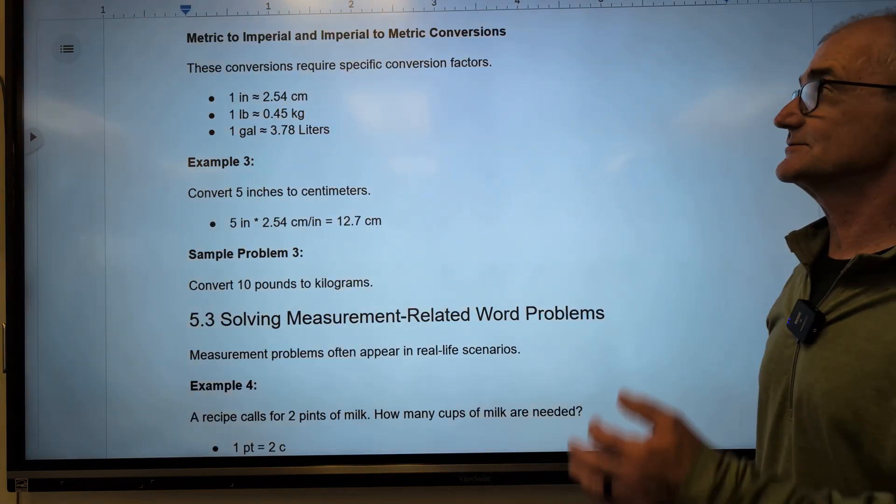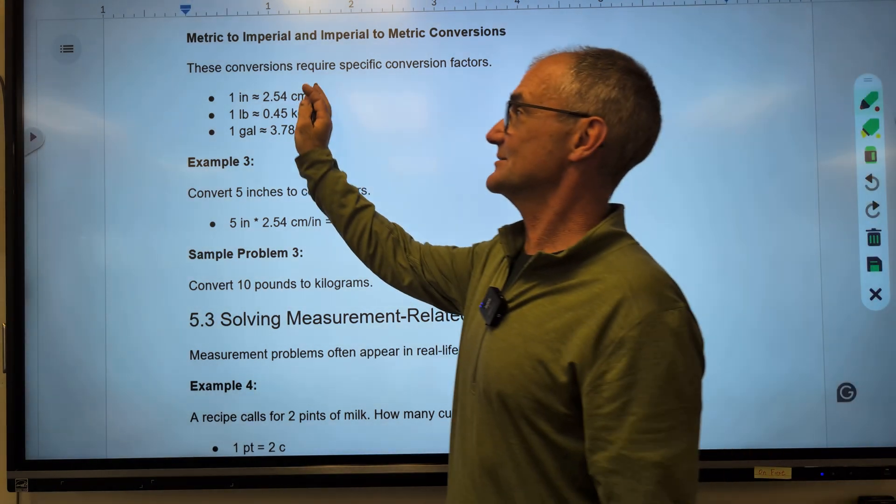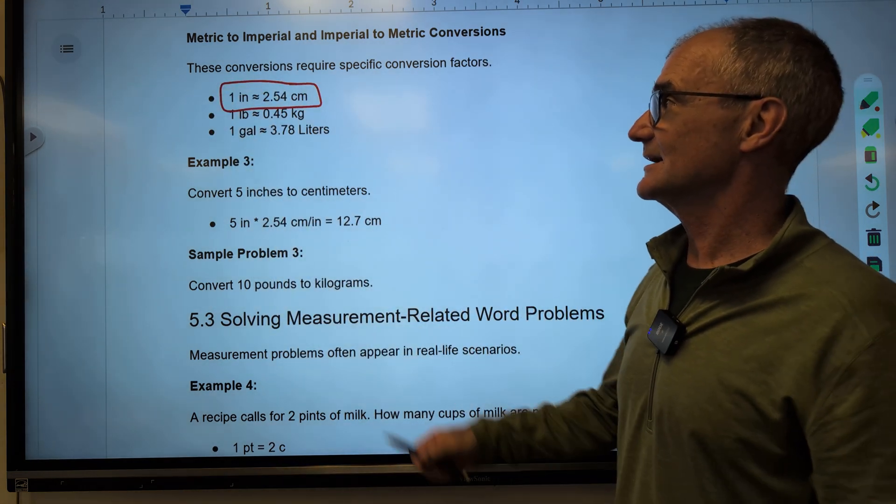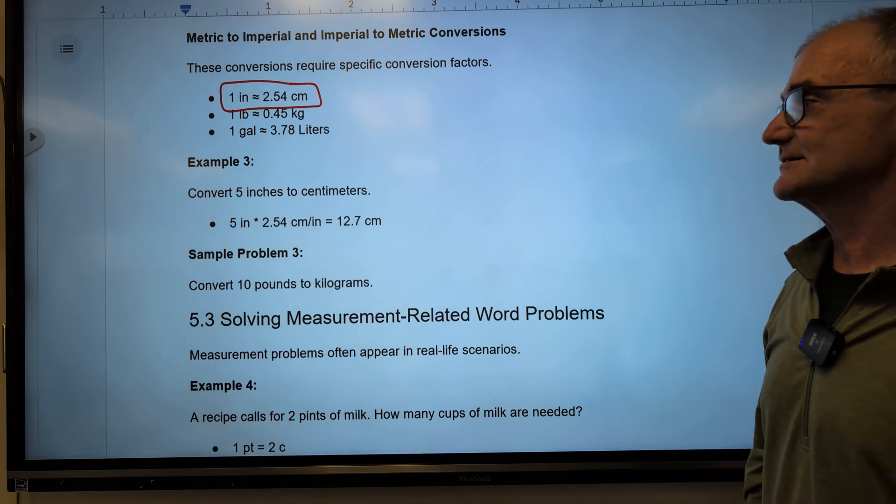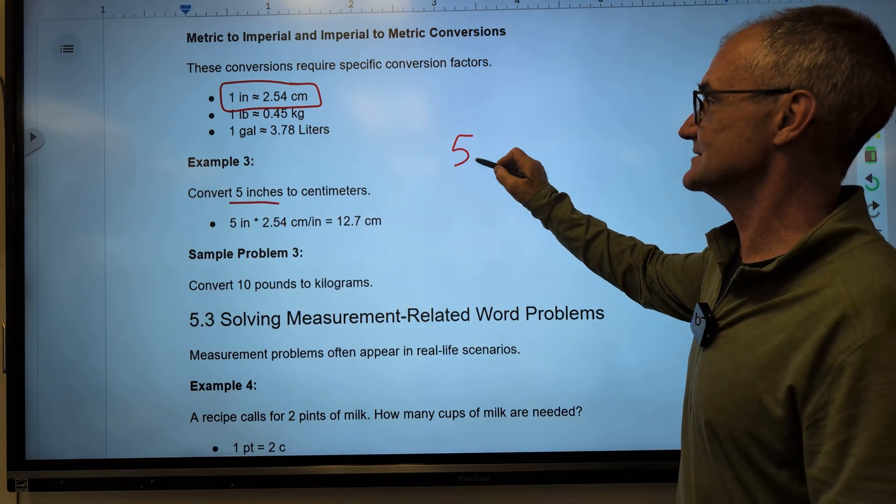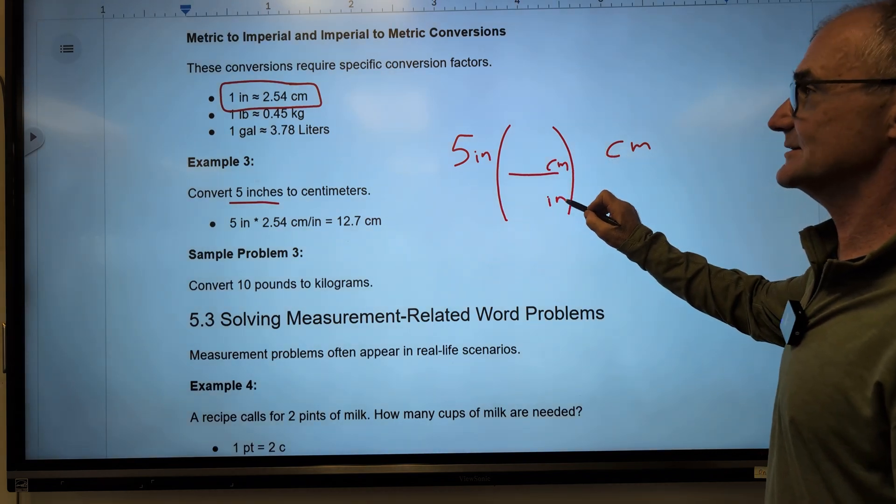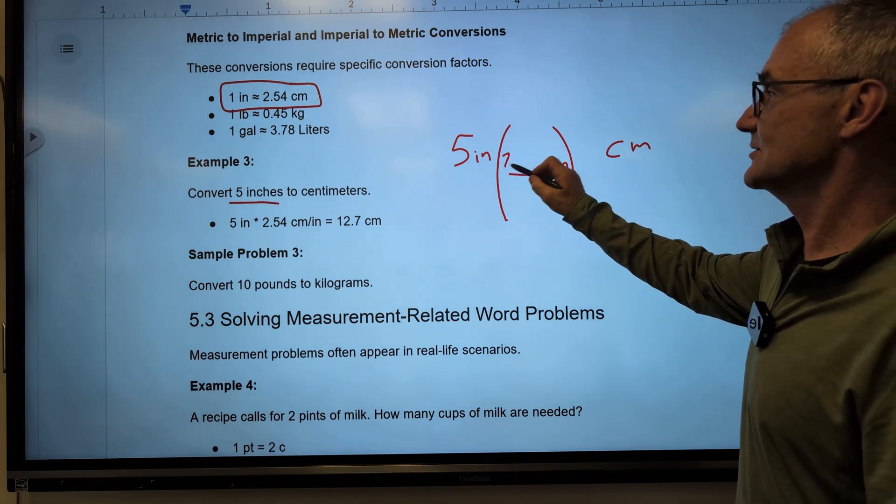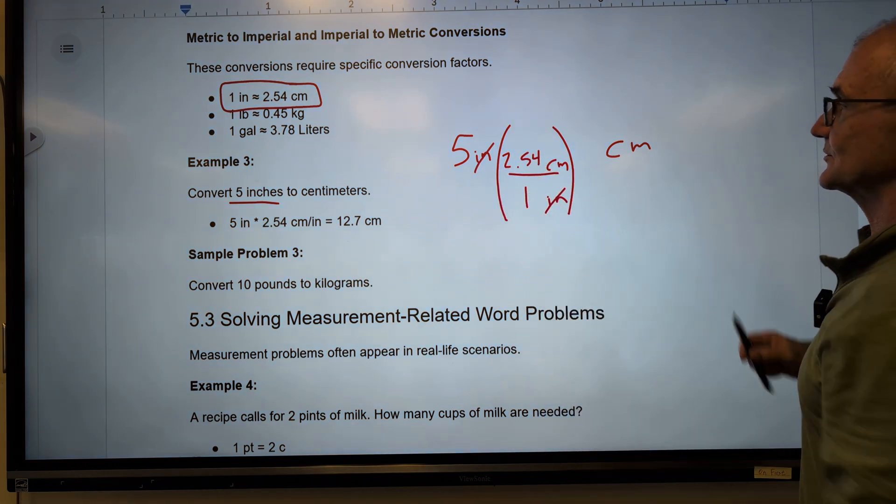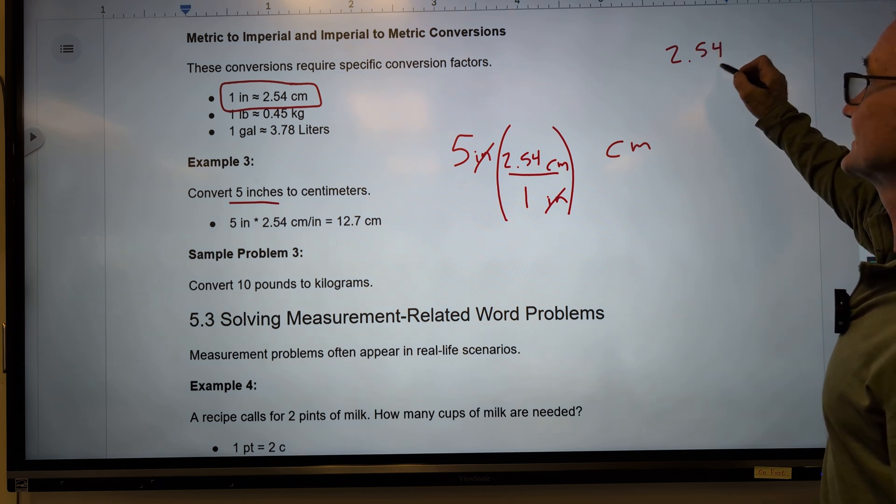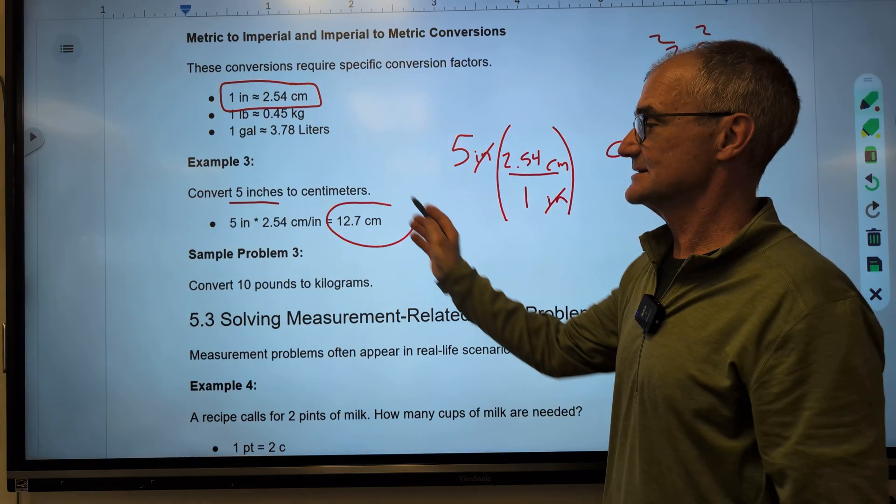Next, let's look at conversions from metric to imperial and back and forth between the two different systems. Your conversion factors here, these are hard to remember, but 1 inch is 2.54 centimeters. I just remember 2.5 centimeters, pretty close. A pound is 0.45 kilos. A gallon is 3.78 liters. So convert 5 inches to centimeters. I'm starting with 5 inches. I need to multiply by something. I want centimeters. So centimeters has to be in the numerator. Inches in the denominator. 2.54 centimeters is equal to 1 inch. Inches cancel. That gives me centimeters. And then 5 times 2.54, and that's 12.7 centimeters.